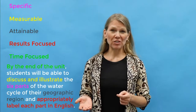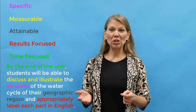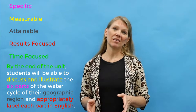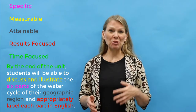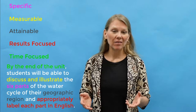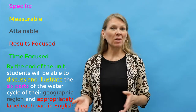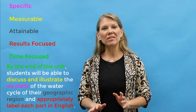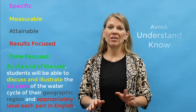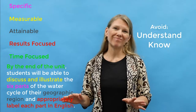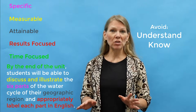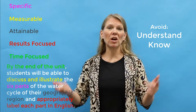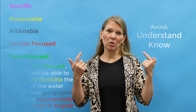You can see that instructors and students can look at this objective and know what the expectation is — either students can do this or they can't. So it's observable and measurable. Words to avoid in student learning objectives are 'understand' or 'know,' since we can't observe or measure how well students do these things, which are internal processes.